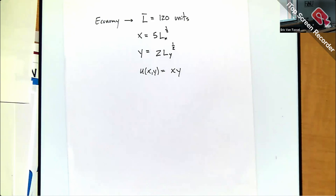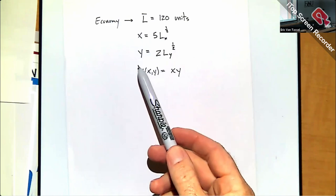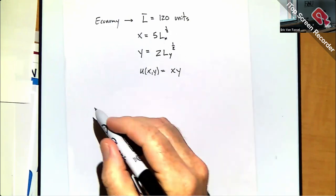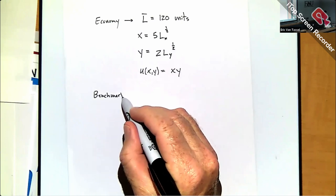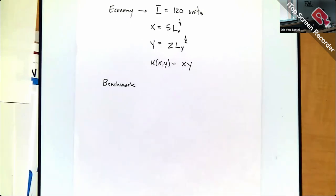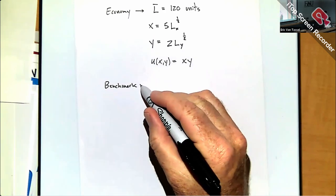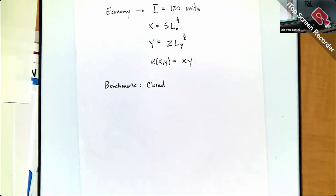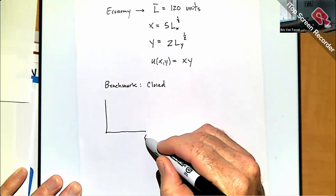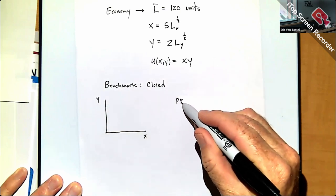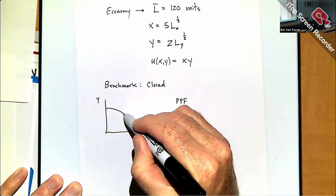What's different from last time is that the economy participates in international markets where they can trade goods X and Y using the resource endowment. Before doing that, let's establish a benchmark by solving the closed economy to see where it winds up, and then we'll do the open economy and compare the two.